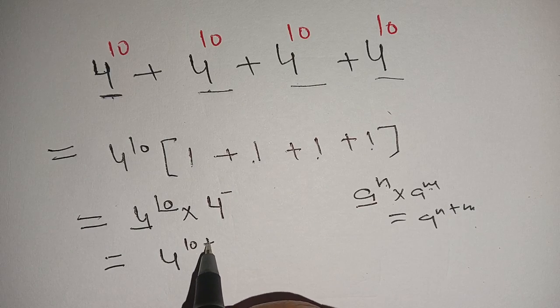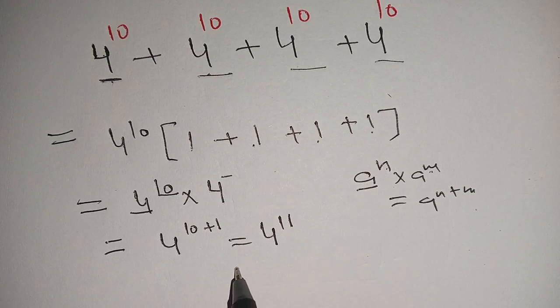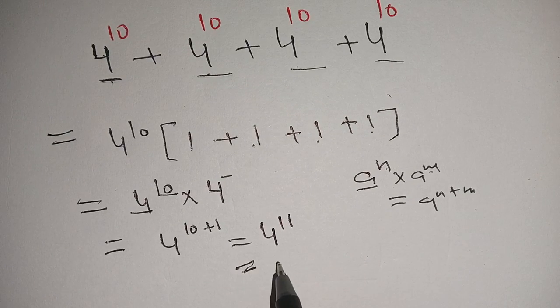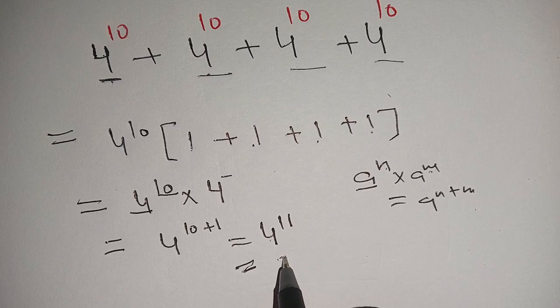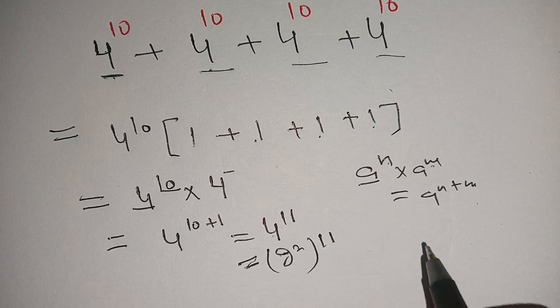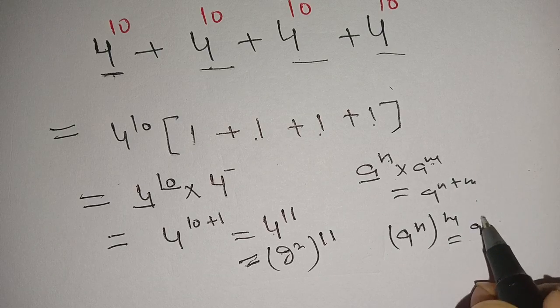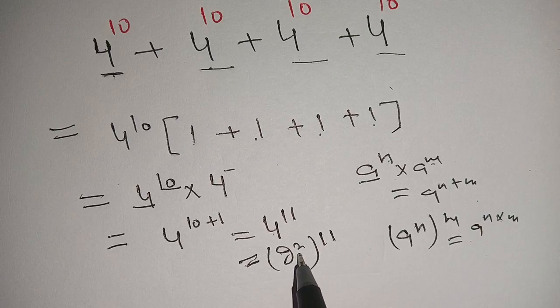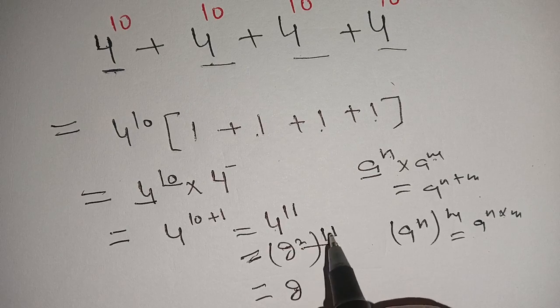Now for further simplification, we write 4 in terms of 2. We can write this as (2²)^11. We know that if (a^n)^m equals a^(n×m), same case here. We have 2^(2×11), which becomes 2^22.